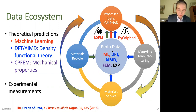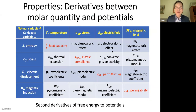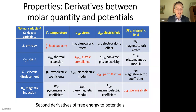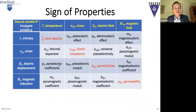Now, what types of properties are we talking about? Properties are derivatives between molar quantities and potentials. The first derivative of Gibbs energy with respect to temperature gives entropy; the second derivative gives heat capacity. All properties in the central part of the table are second derivatives of free energy with respect to potentials. We now have four potentials: temperature, stress, electrical field, and magnetic field. This set of properties — heat capacity, thermal expansion, and related quantities — are what we usually measure.